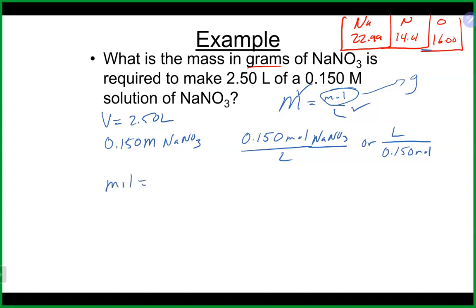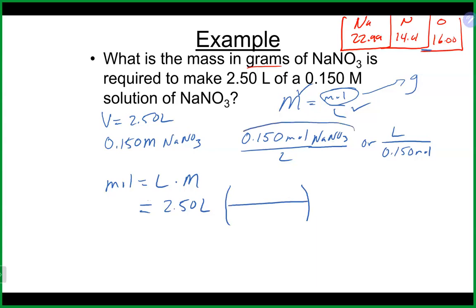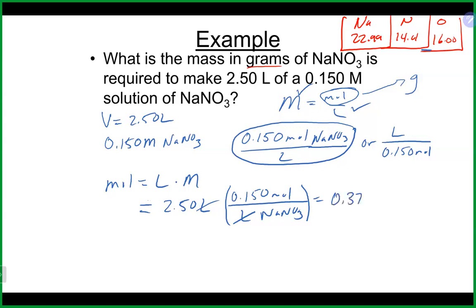Setting it up with dimensional analysis, we take our 2.5 liters — no conversion needed since it's already in liters — and multiply by 0.15 moles per liter of sodium nitrate. The liters cancel, and 2.5 times 0.15 gives us 0.375 moles of sodium nitrate.